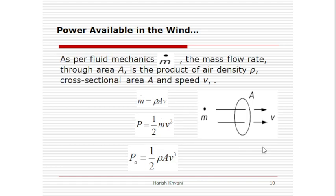Now come to the fluid mechanics. m dot, mass flow rate through an area is the product of air density and cross sectional area and wind speed. Since wind is flowing, m dot is product of three things: area through which wind flows, air density, and wind velocity. So m dot is rho A v. Our power is half m dot v square. If we substitute m dot value here, P_a is nothing but the power available in the wind, half rho A v cube.